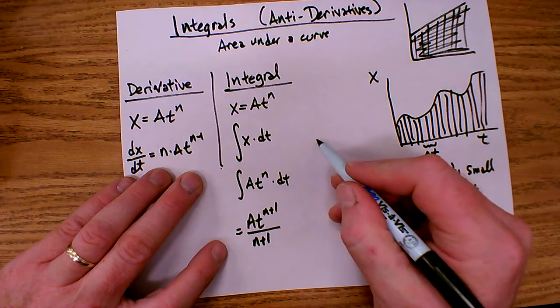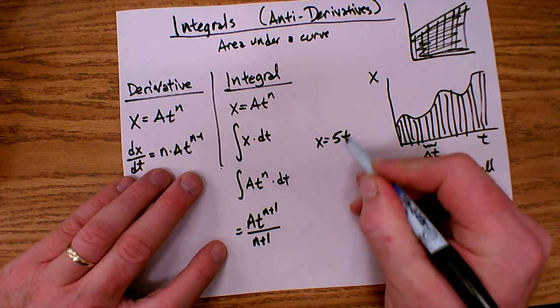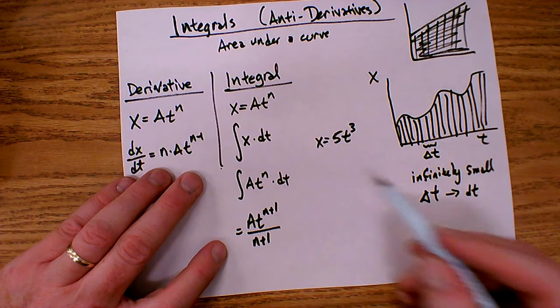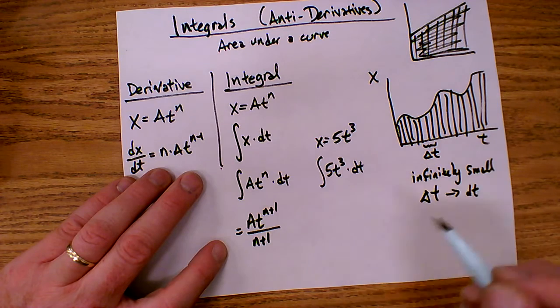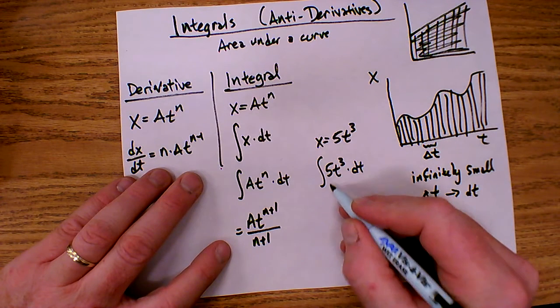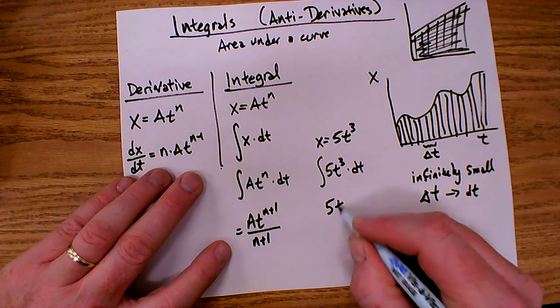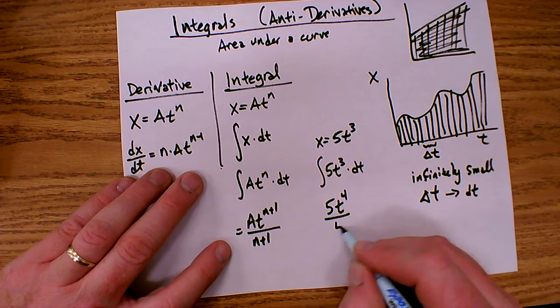Let's look at an example. If x equals 5t cubed, then the integral of 5t cubed dt is 5t to the fourth over 4.